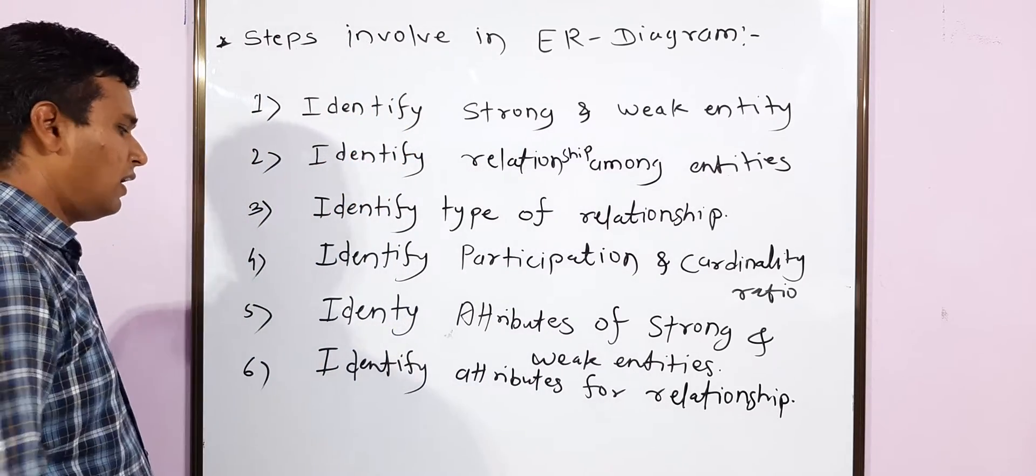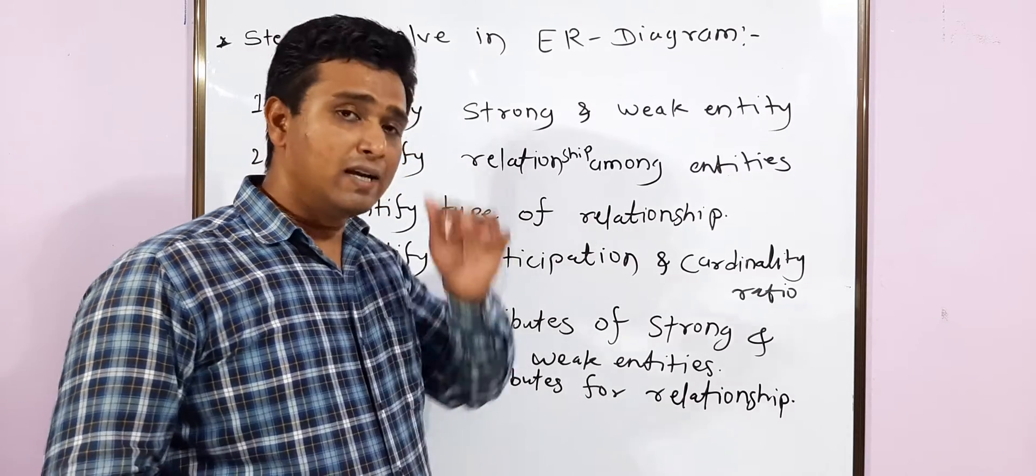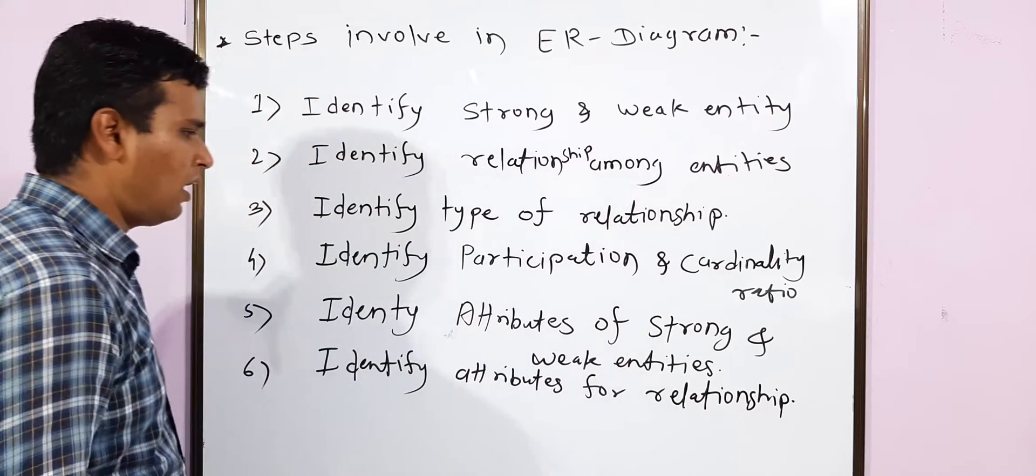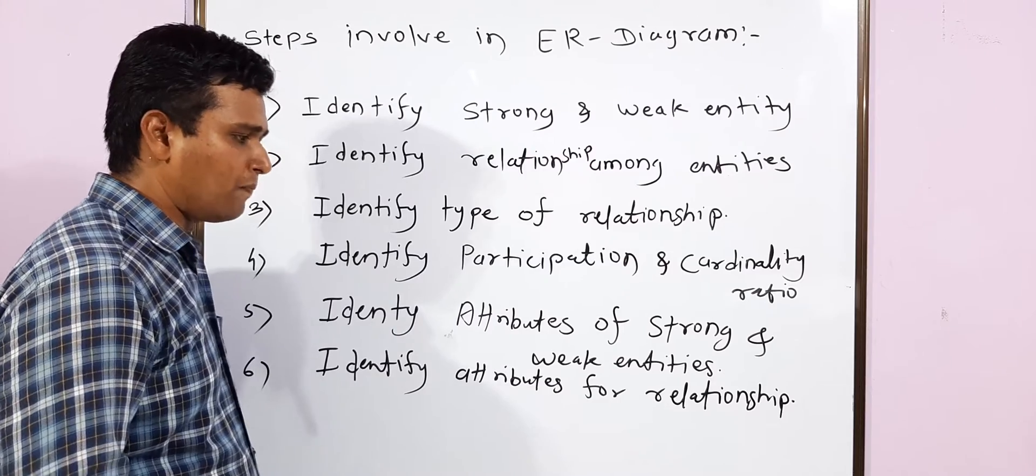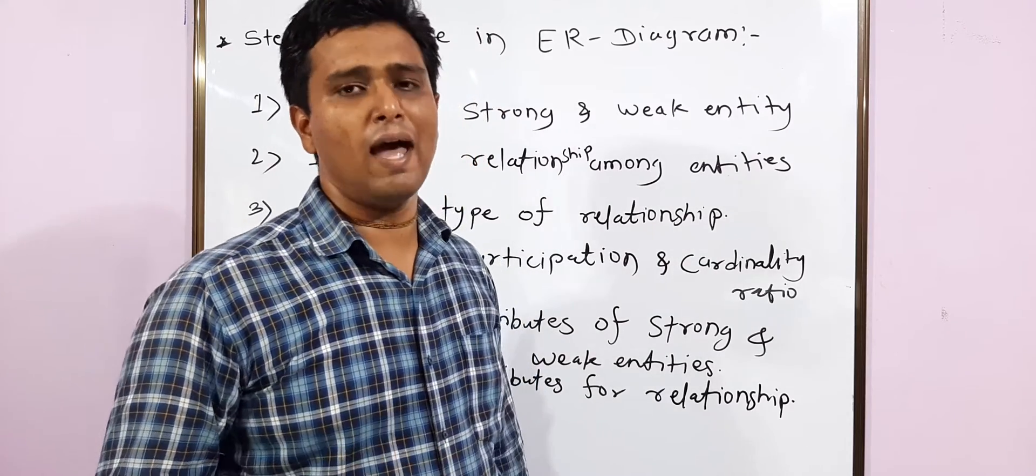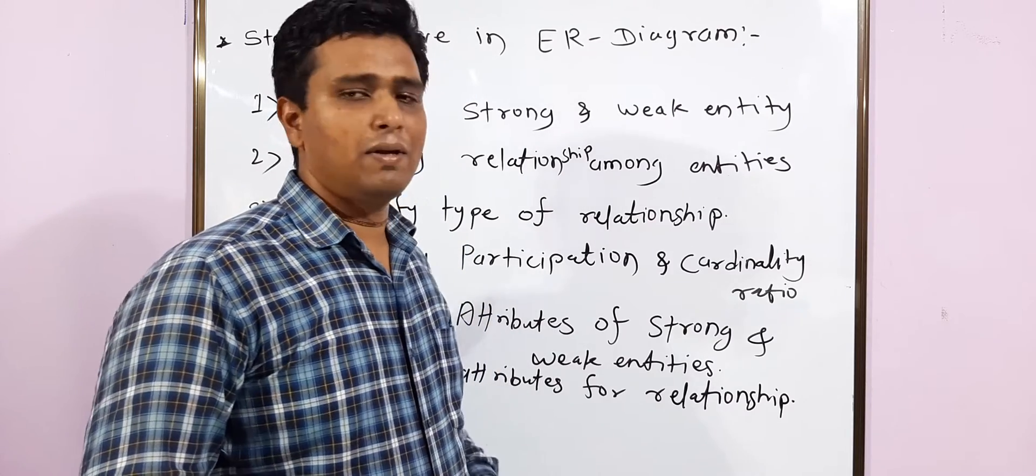Fifth step is identify attributes for strong and weak entities. We would like to find out the attributes for strong as well as weak entities. Sixth step is identify attributes for relationship. Relationship sometimes may have some extra attributes that we will understand in examples.